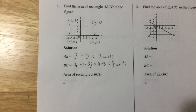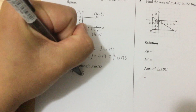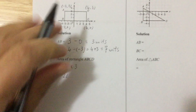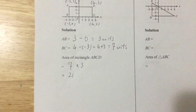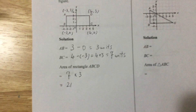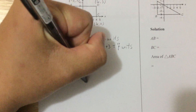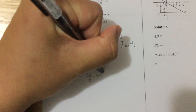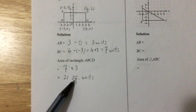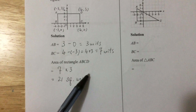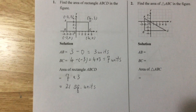So the area is 7 times 3, which is 21. Please pay attention — this is the area, so you need square units. We write it as sq. units. You cannot write 'units squared' — that is incorrect. So the answer is 21 square units.